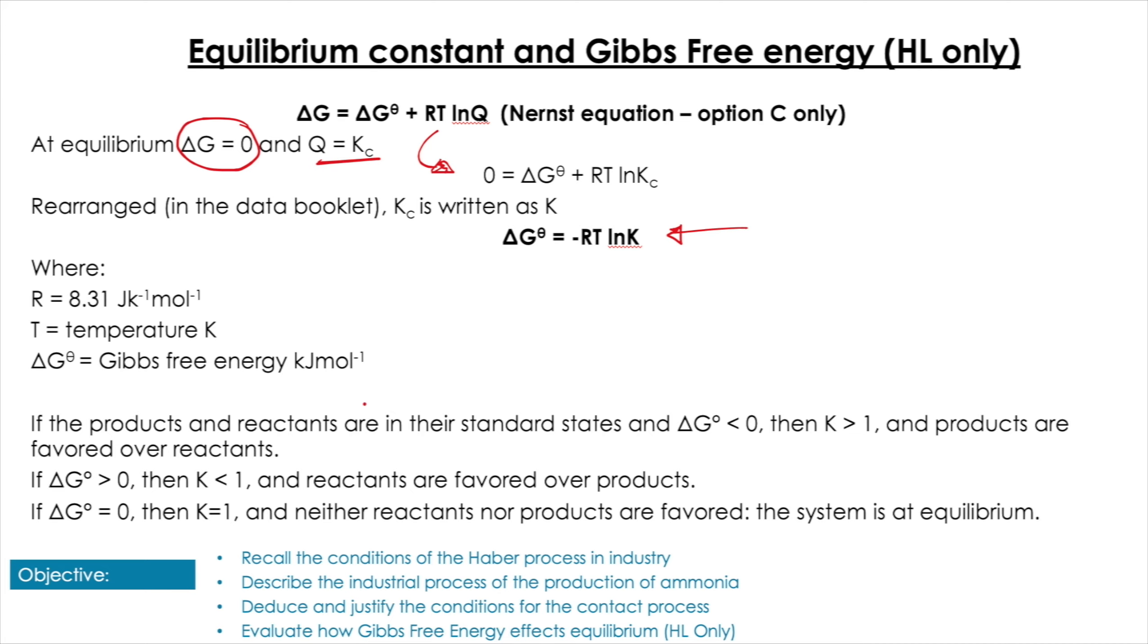So we can see this as: if we have the products in their standard states and the reactants as well, and ΔG° is smaller than zero, then K will be larger than one and products are favored over reactants. And obviously that's inversely true if ΔG° is larger than one. And if they're equal, then neither is favored.